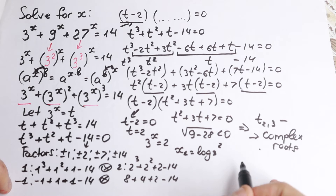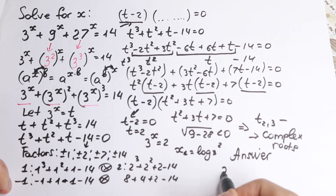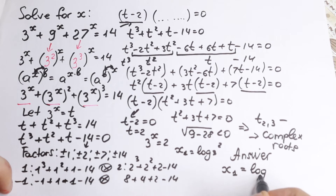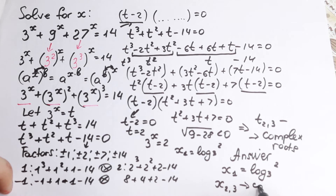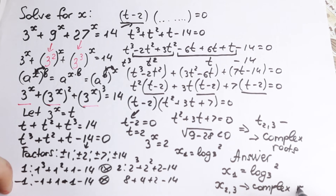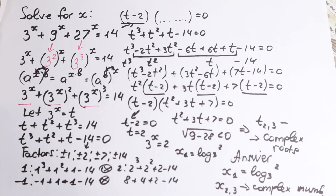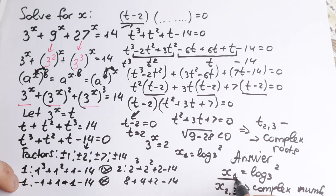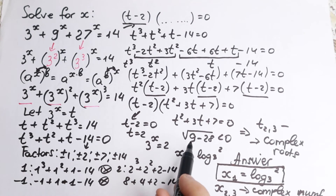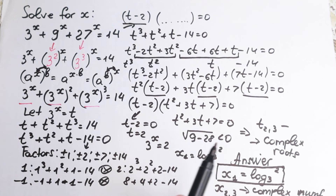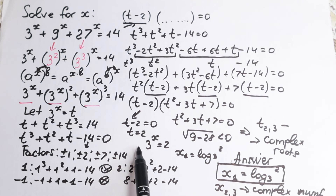So the answer: the real root is x first equals log base 3 of 2, and x second and x third are complex numbers. If you're interested in the complex roots, you would take the complex values of t from the quadratic, bring them back to 3 to the x equals t, and solve — the result involves i and square roots, making it much more complicated than the real case.